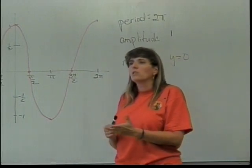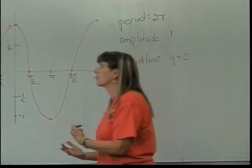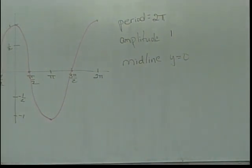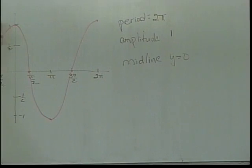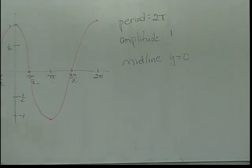Here are some important things to notice. A basic sine graph crosses the y-axis at 0. A basic cosine graph crosses the y-axis at its highest point. So when we see a graph that goes through the origin (0, 0), it's most easily written as a sine graph. If we see that it's at a high point on the y-axis, then it will be more easily written as a cosine graph.